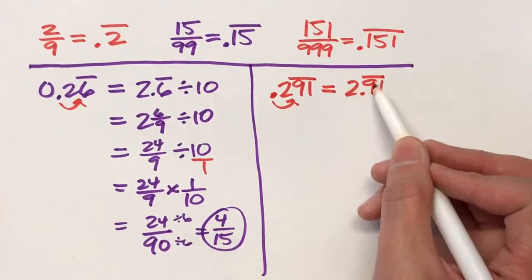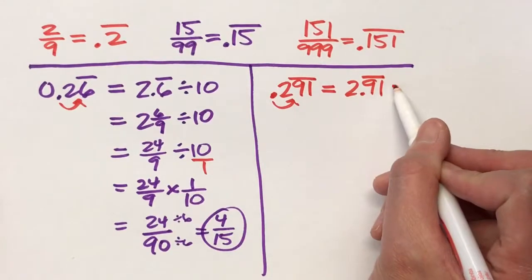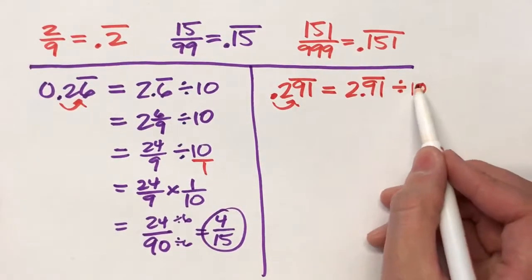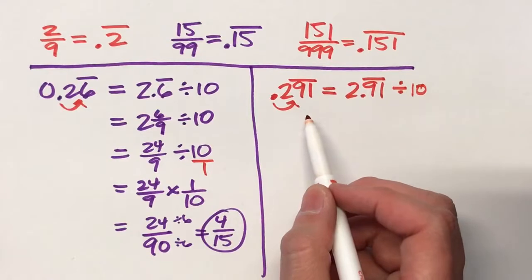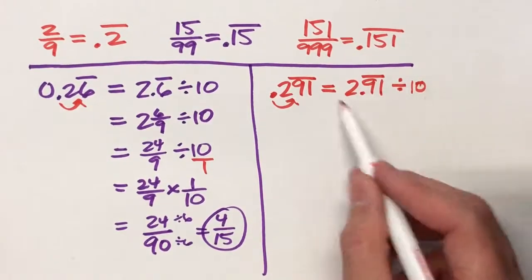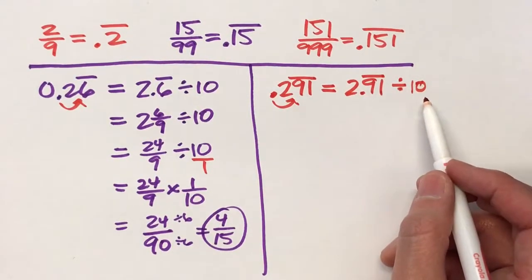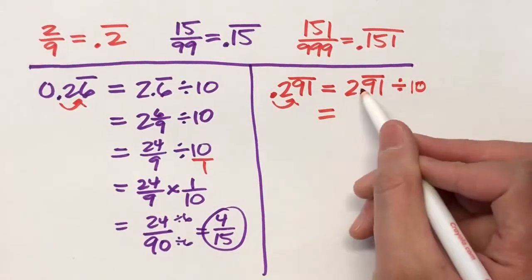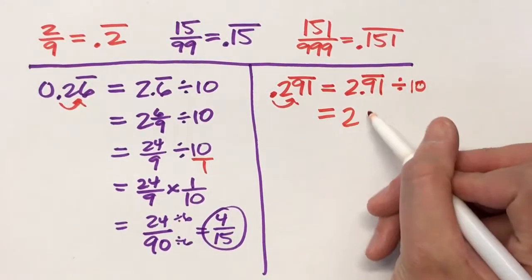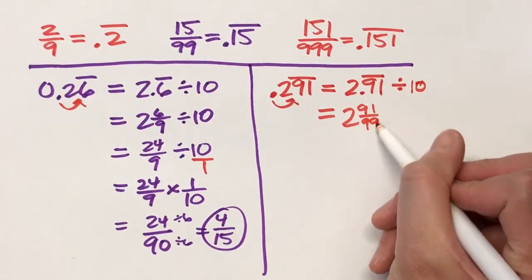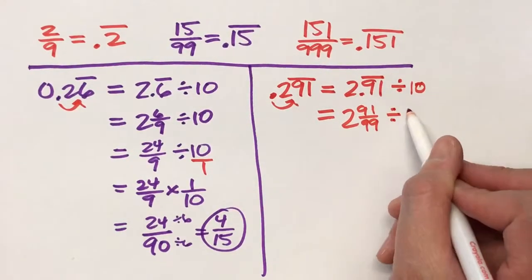So I know 2.91 with the 9 and 1 repeating divided by 10 equals 0.291. So now if I simplify this side, I should be able to get my fraction. 2.91 repeating is 2 and 91/99ths. Drop down the divide by 10.